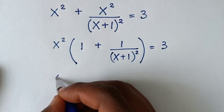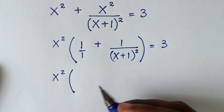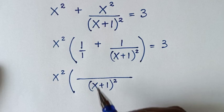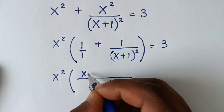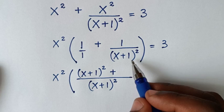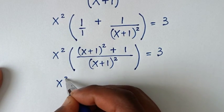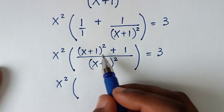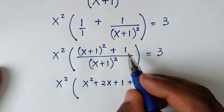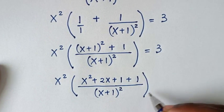In the next step, we have x² times [1 + 1/(x+1)²]. The LCM of 1 and (x+1)² is (x+1)². So we write this over the LCM: (x+1)² divided by 1 gives (x+1)², and (x+1)²/(x+1)² is 1. Then we expand (x+1)² = x² + 2x + 1, plus 1, over (x+1)², equals 3.